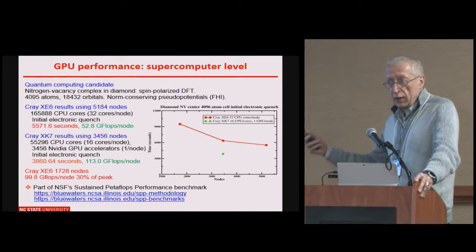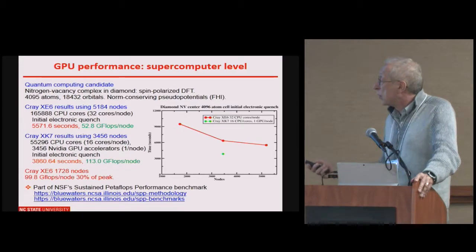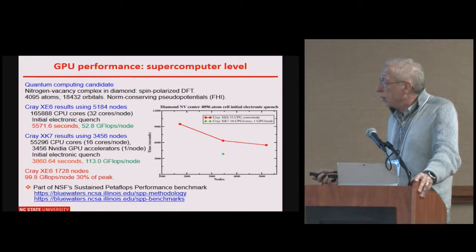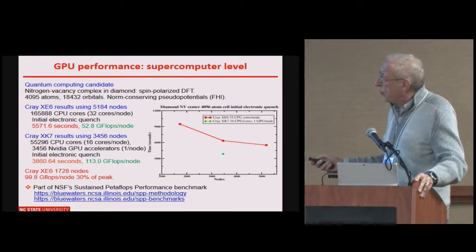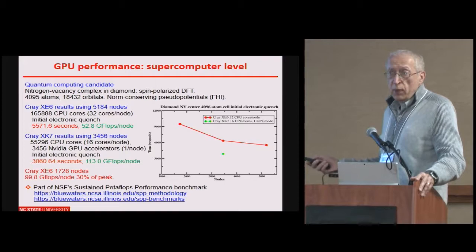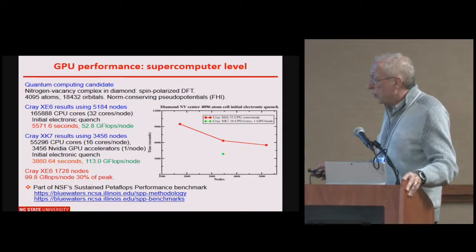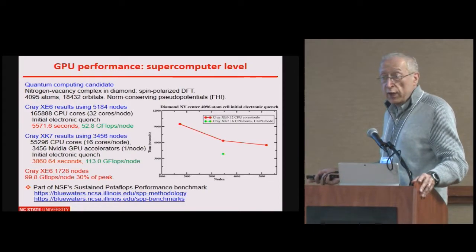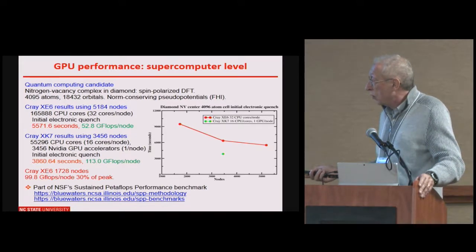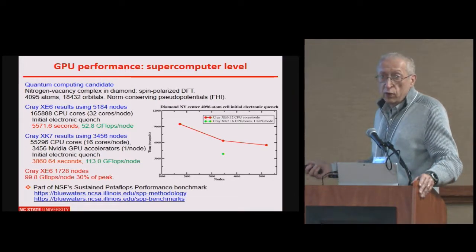On Blue Waters, we compare scaling without GPUs and with GPUs, and you can see that there is still a significant gain. This exact example uses 4,000 atoms, 18,000 orbitals, and is spin-polarized. It is part of the Sustained Petascale Performance Benchmark, which is on the website. We'll see how it does on the next-generation architectures of NSF's Track 1 system. You can also see that we are getting large fractions of peak performance.